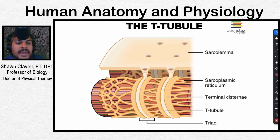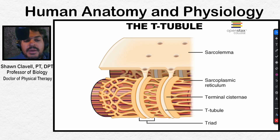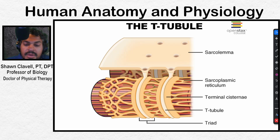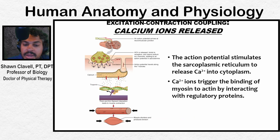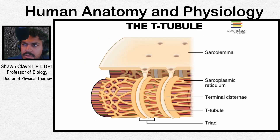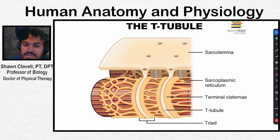What we see here is just a portion of the muscle fiber, almost a cross-section taken deep into it. We can see that the specialized cell membrane is referred to as the sarcolemma — here's our sarcolemma.